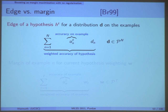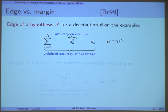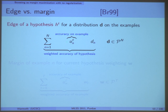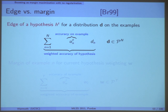I have to define what I mean by the edge more precisely — I did it in the first lecture informally. This was the accuracy of an example: plus one if you were classified correct, minus one if opposite. We also have a weighting on the example. The weighted average — weighted accuracy — that's what I call the edge.